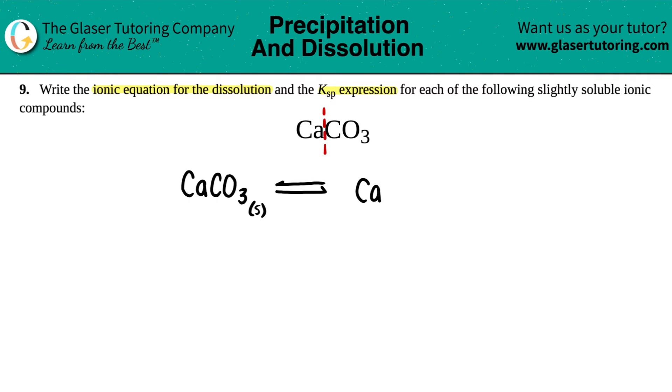So I have Ca plus CO3. But now since these broke up, they broke up into the ions. What are the charges? Well, generally we would take the subscripts and crisscross them back up, right?